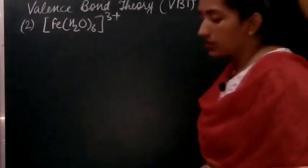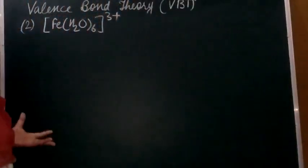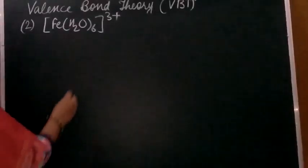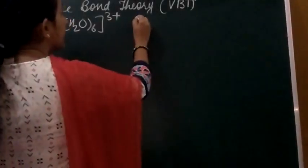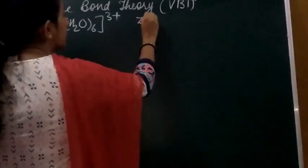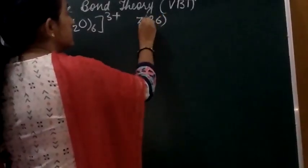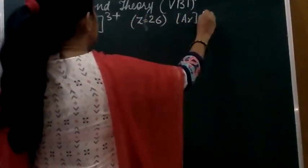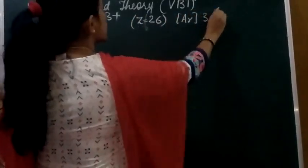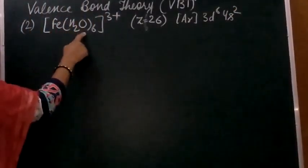We will discuss an example of an outer orbital octahedral complex. We will start with the configuration of iron. The atomic number of iron is 26, so Z equals 26 for iron. The ground state configuration is written as: [Ar] 3d⁶ 4s².